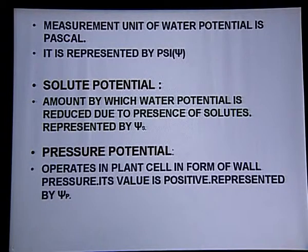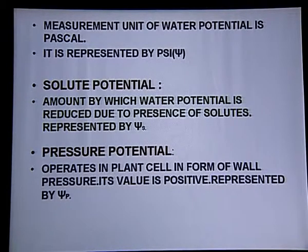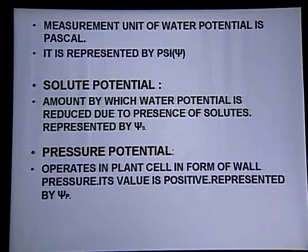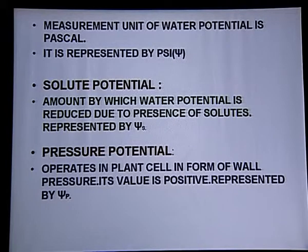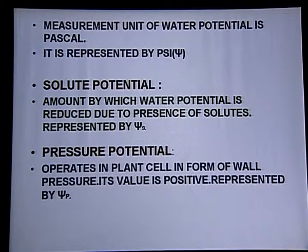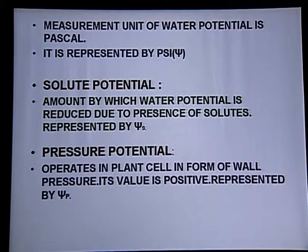Next is pressure potential — that operates in plant cells in the form of wall pressure. We have already discussed that when water enters the cell, it becomes turgid and swells up. Turgur pressure develops inside and pushes on the cell wall. The cell wall exerts equal and opposite pressure back on the cell so it doesn't burst. This pressure exerted by the cell wall is called wall pressure. Pressure potential operates in plant cells as wall pressure, its value is always positive, and it is represented by Ψp (psi p).